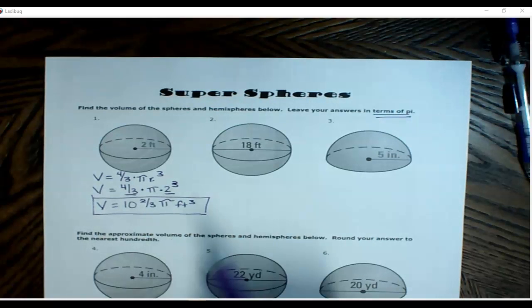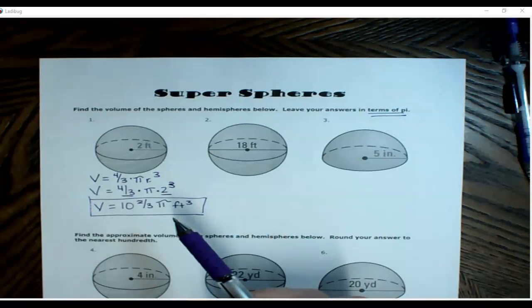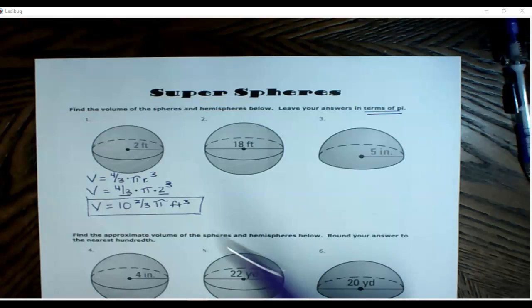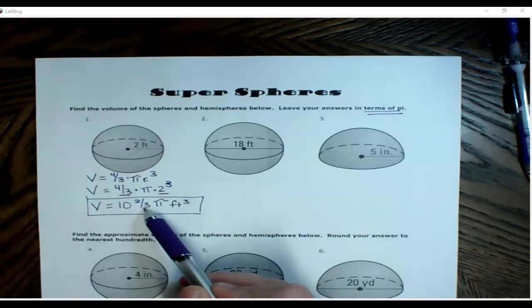So that's how we solve for leaving it in terms of pi. If you happen to have written the decimal, 10.67, if you rounded it, pi, that's an acceptable answer, but if this was a test question, remember this is the most exact answer, 10 and two-thirds pi.